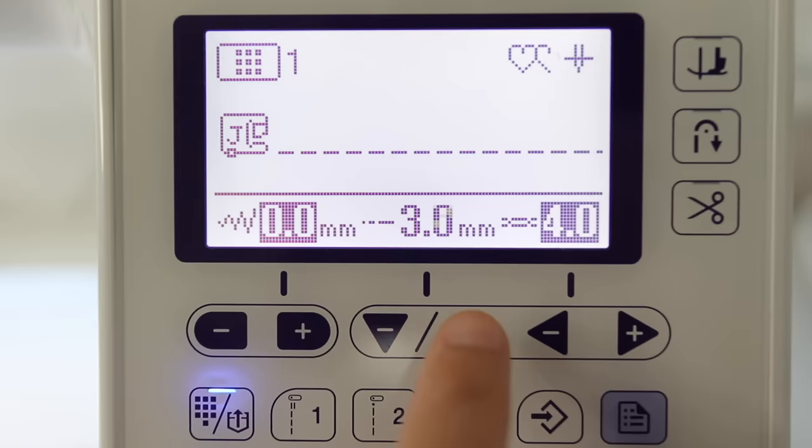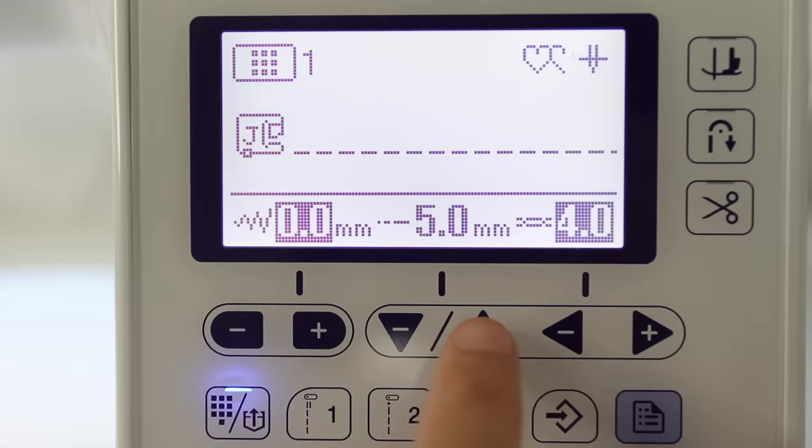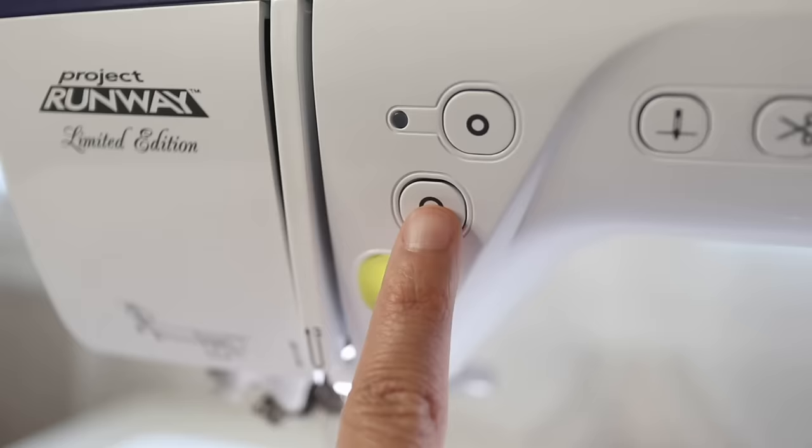Whenever I need to do a basting stitch which is a temporary stitch, I just increase my stitch length to the highest number my machine will let me go up to. And when I'm top stitching I'll bump it up to 3 or 3.5.